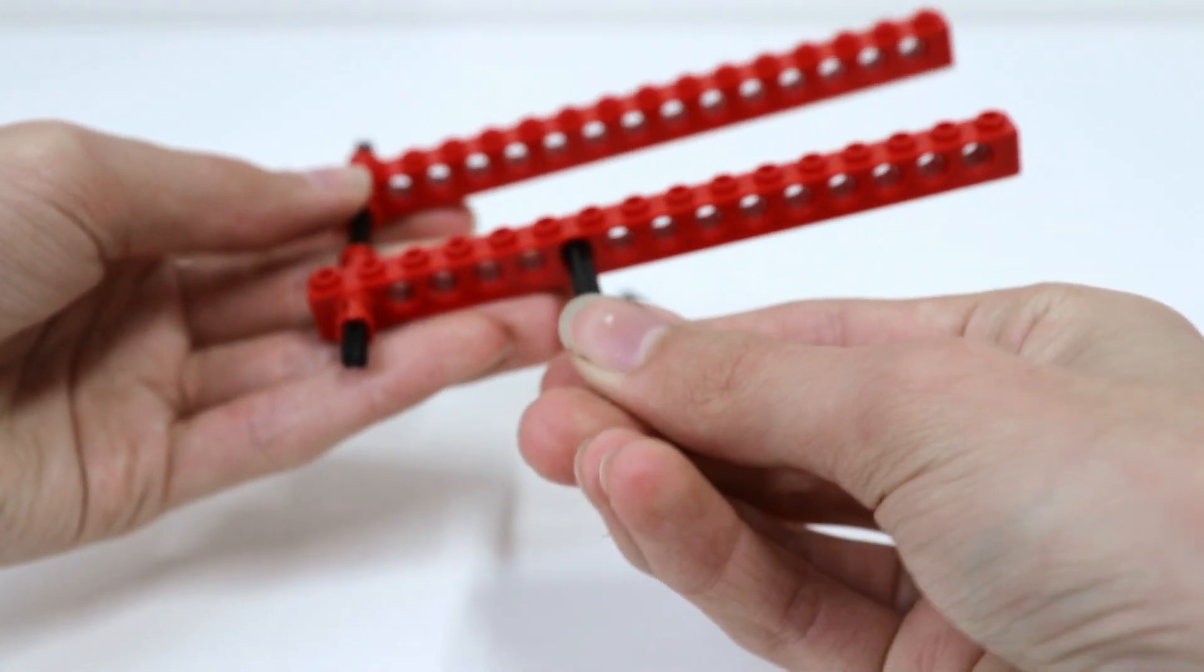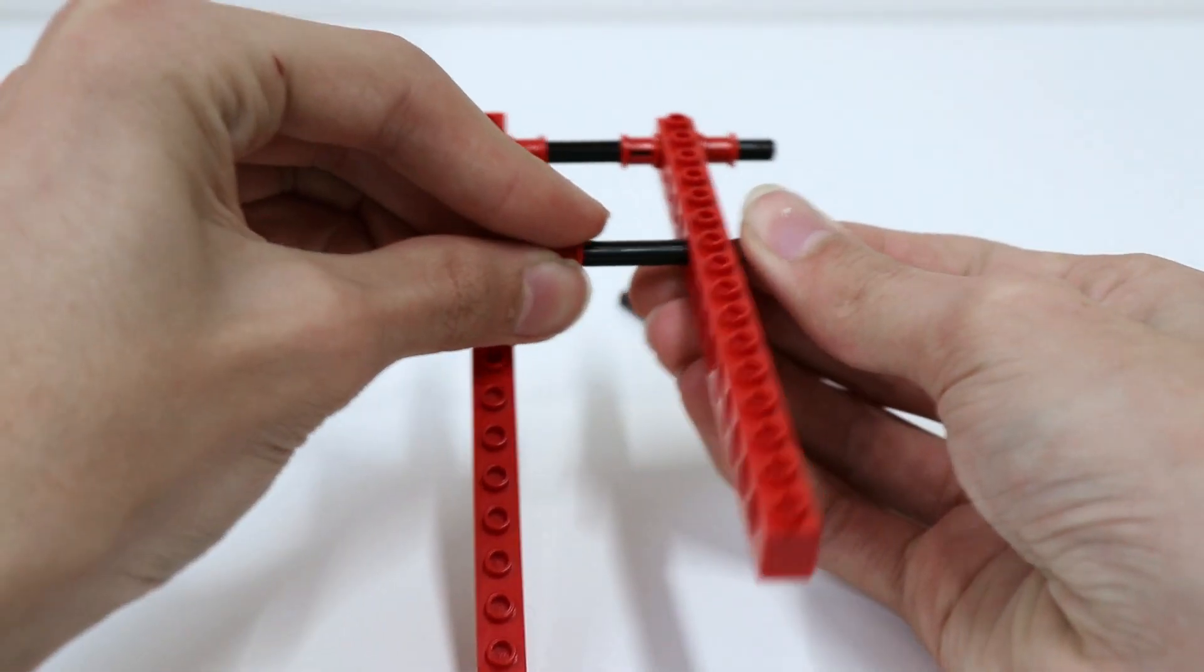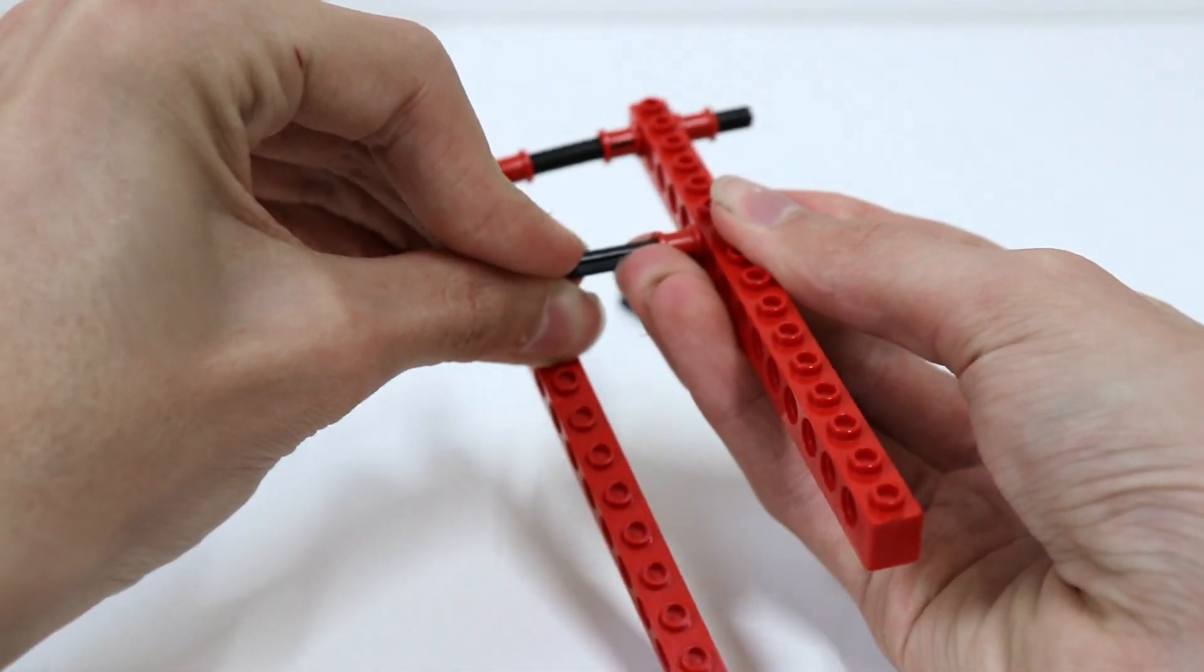Now let's get the smaller axle and put it through the sixth hole and using the stoppers on the inside.